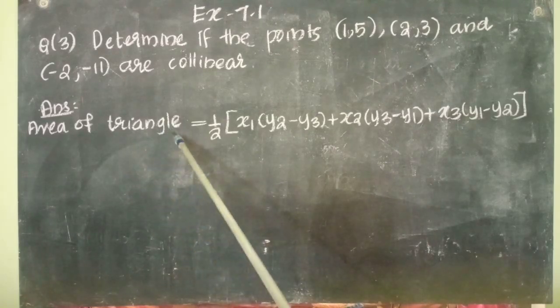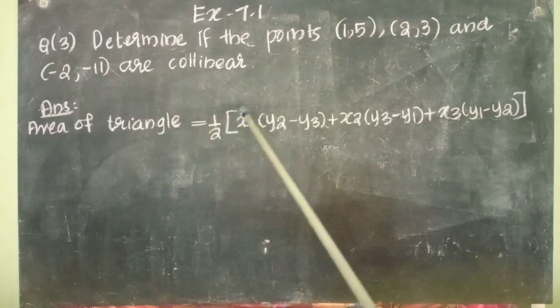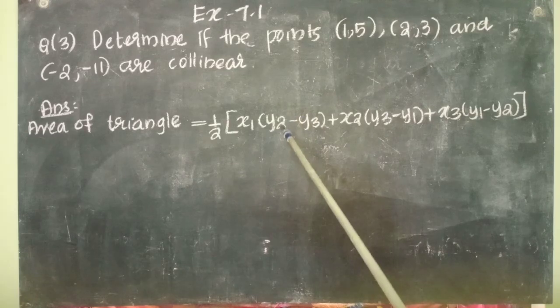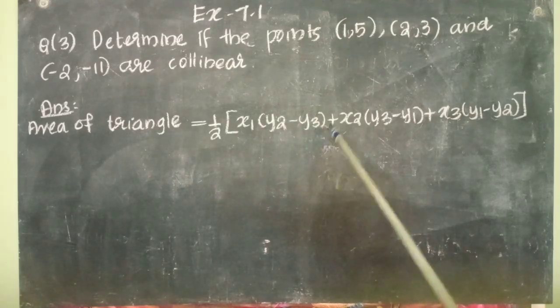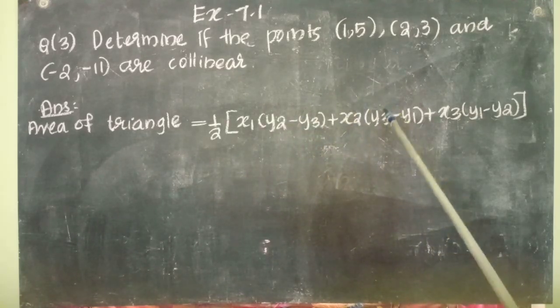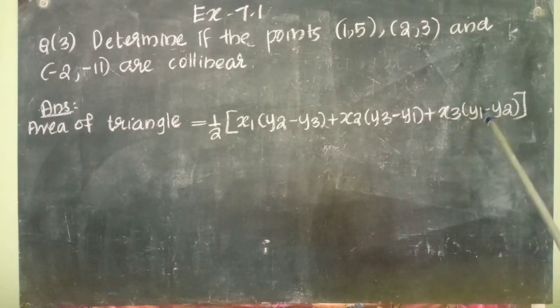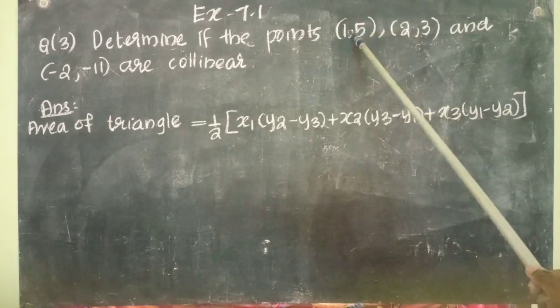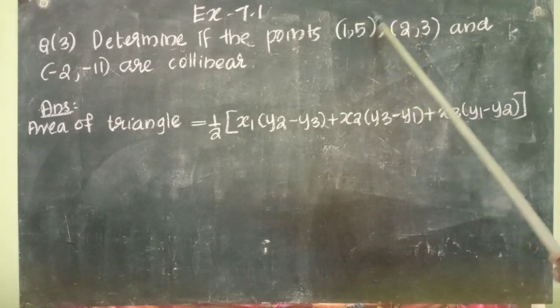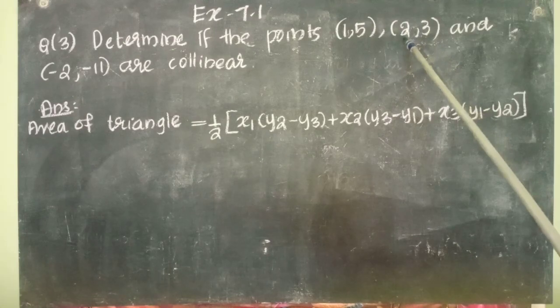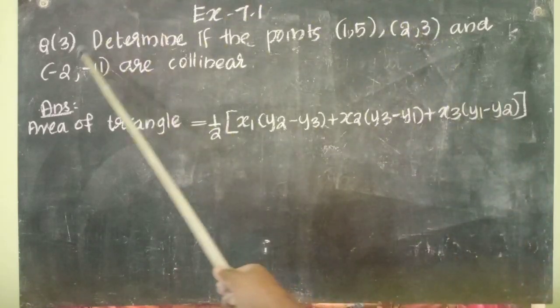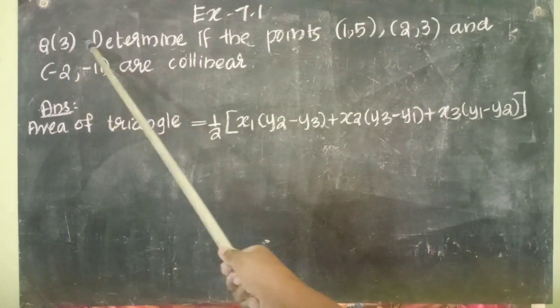Area of triangle equals half into x1 into (y2 minus y3) plus x2 into (y3 minus y1) plus x3 into (y1 minus y2).